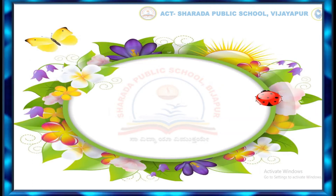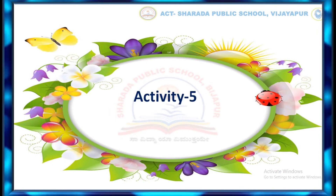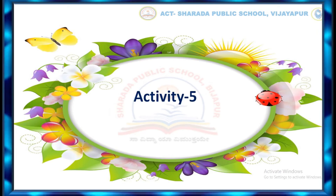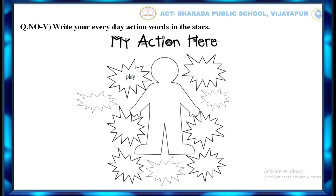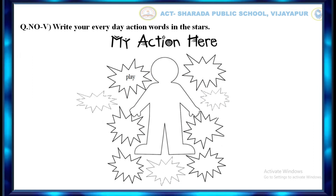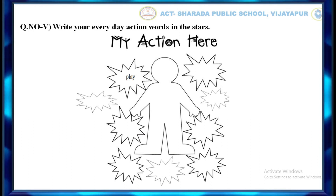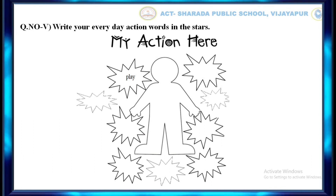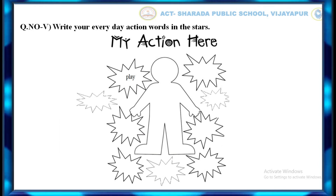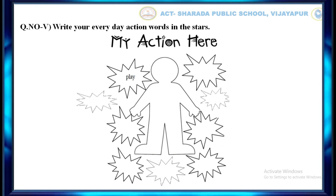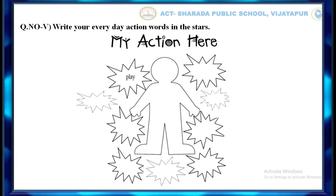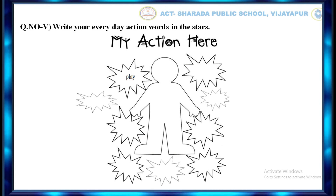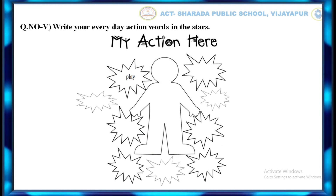Let's start activity number 5. Write your everyday action words in the stars. For example: play. Children, write the things you do every day. Now let's start.